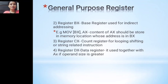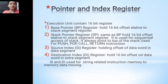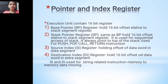Next are pointer and index registers. In the execution unit, these are 16-bit registers. The base pointer (BP) holds a 16-bit offset relative to the stack segment register — it holds the 16-bit base address of the stack segment. The stack pointer (SP) is also a 16-bit offset related to the stack segment register and is used for sequential access of the stack.